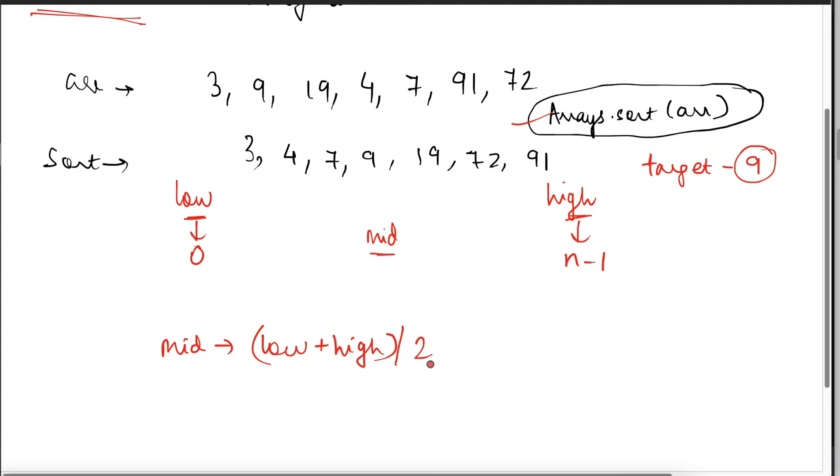Later on, we are going to see how can we optimize this formula. But as of now, let's just try to understand. Low plus high by 2 is the mid. Mid, low and high. Always remember, these are not the elements. These are the pointers. So they're pointing to the index of the element and not to the element.